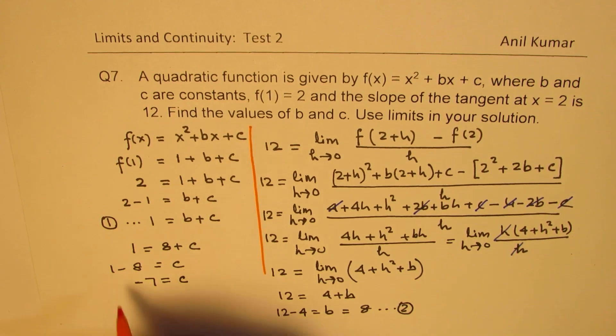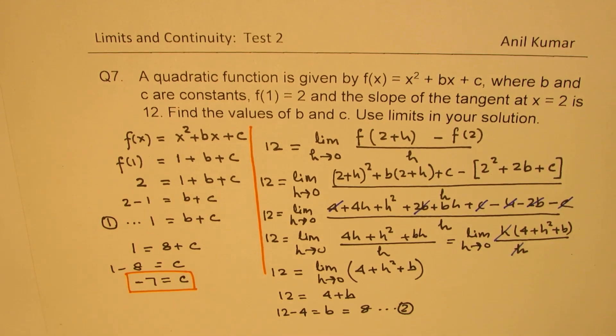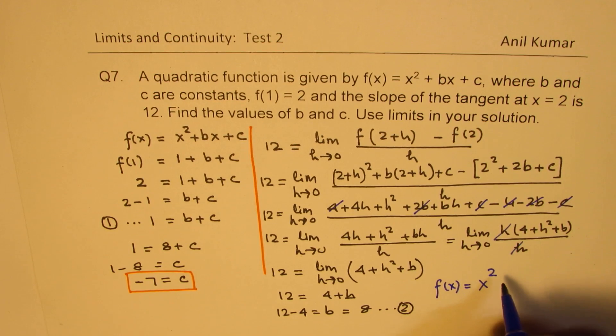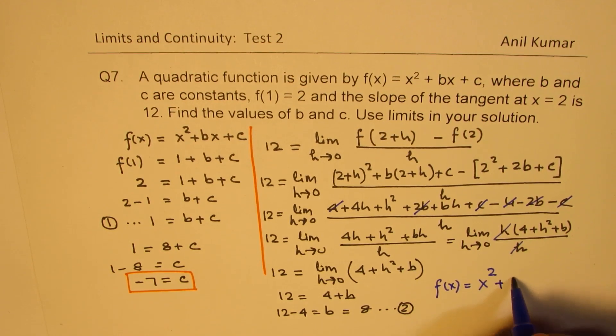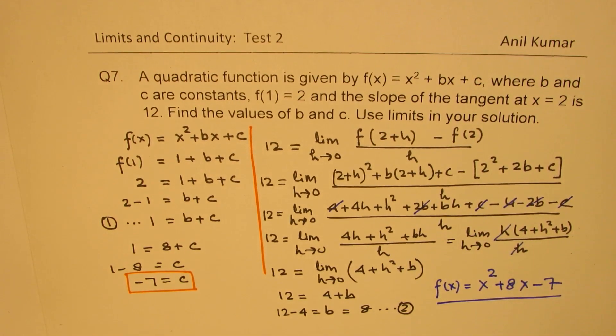So we get the value of both b and c. So that means the function is f(x) = x² + 8x - 7. So that becomes the function. So that is how we are going to solve this particular question. I hope the steps are absolutely clear.